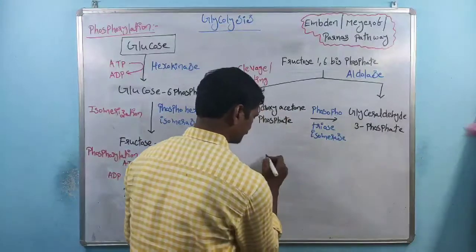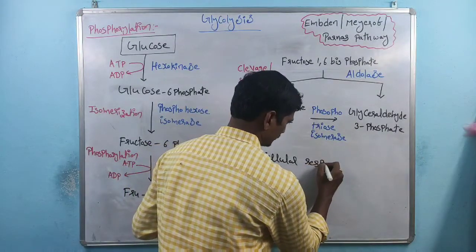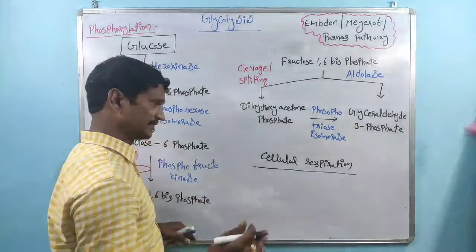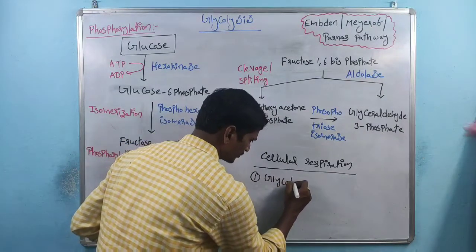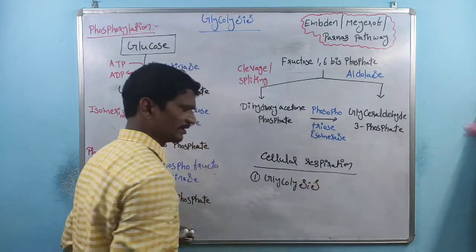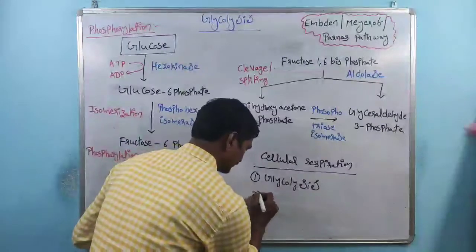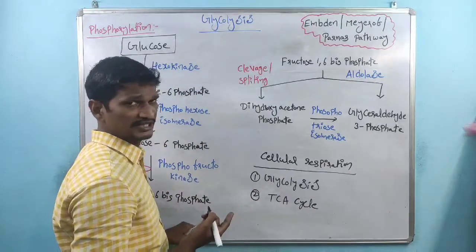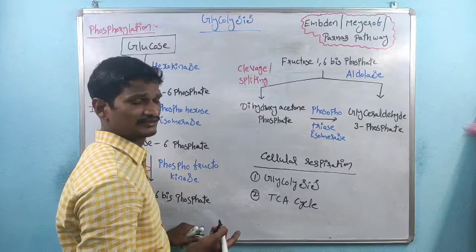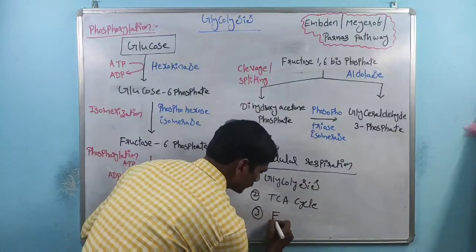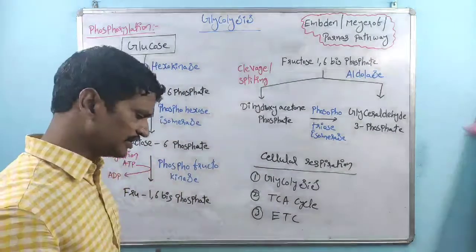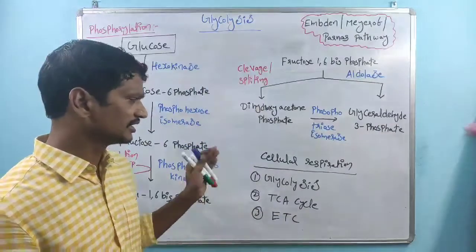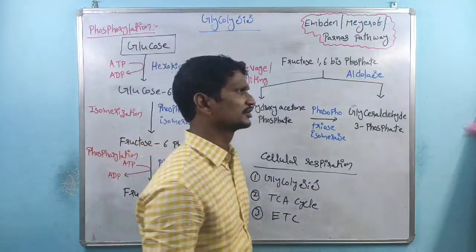Cellular respiration takes place majorly in three phases. The very first one is called as glycolysis. The next phase is called as TCA cycle — also called citric acid cycle or tricarboxylic acid cycle. The third one is the electron transport chain. So, cellular respiration majorly occurs in these three phases: glycolysis, the TCA cycle, and the electron transport chain.